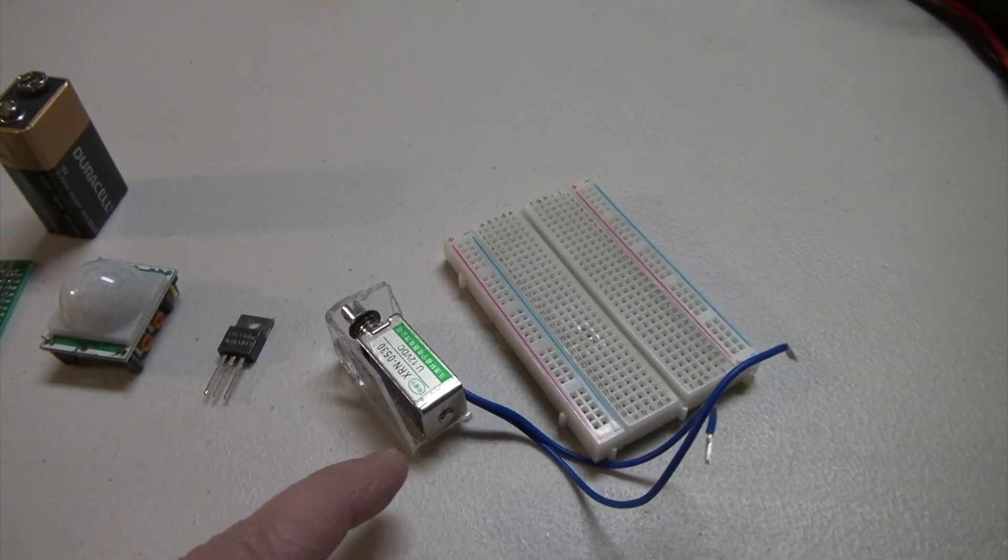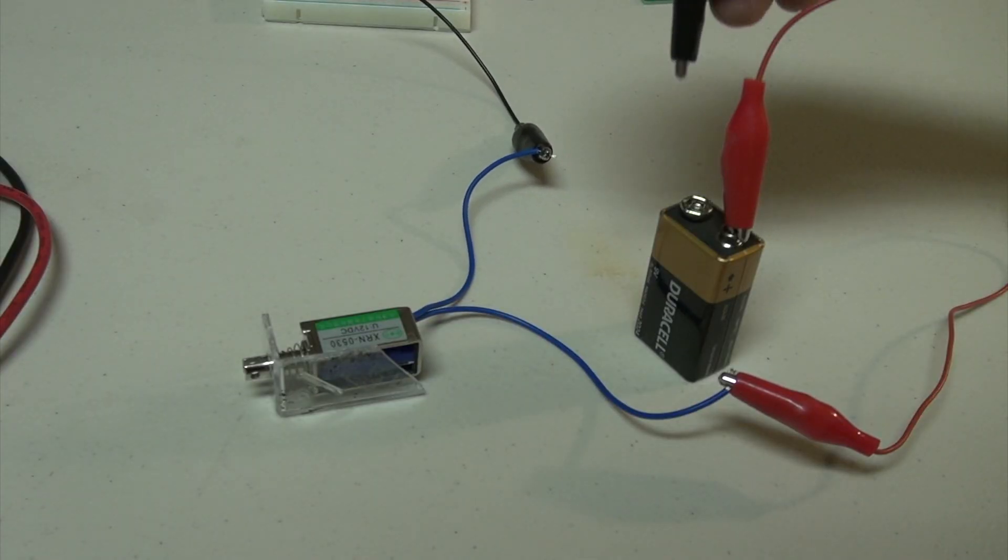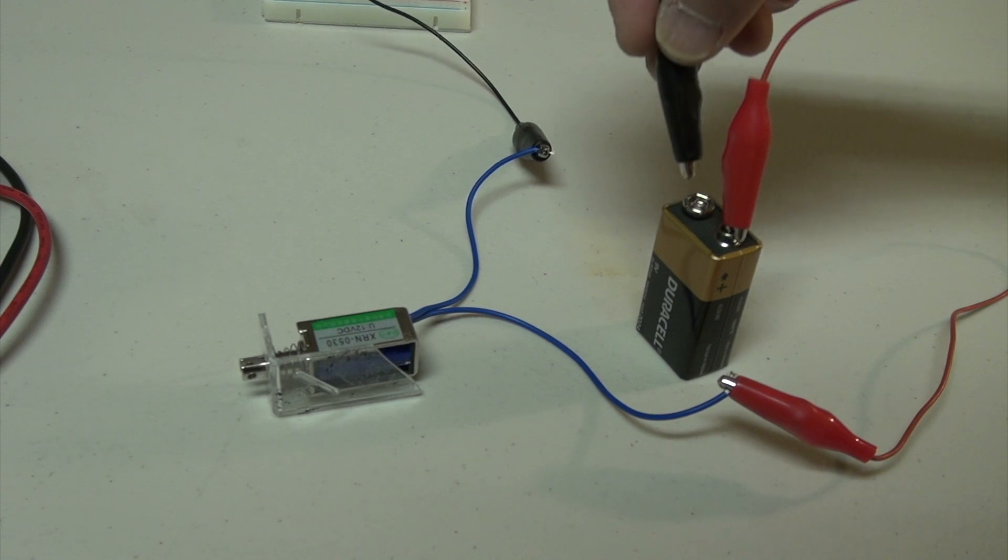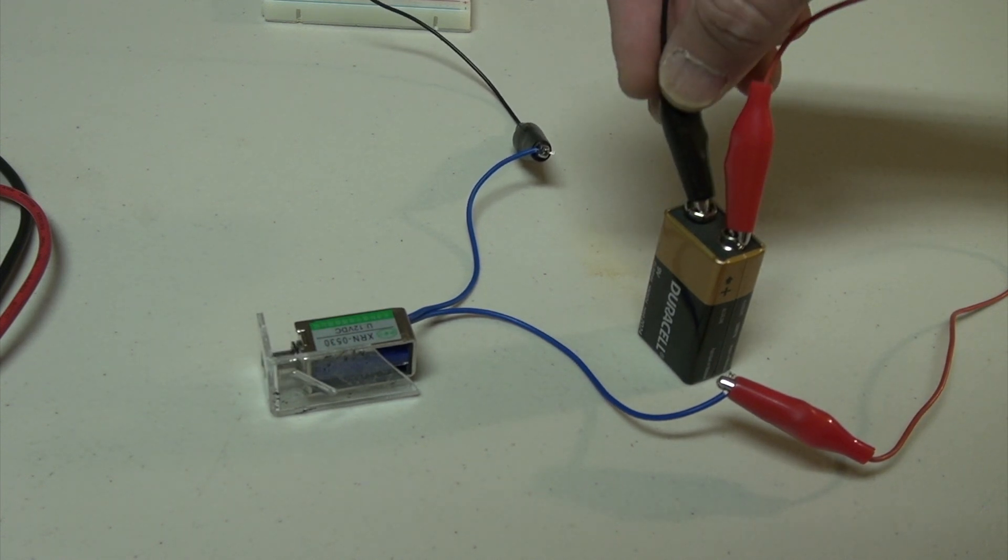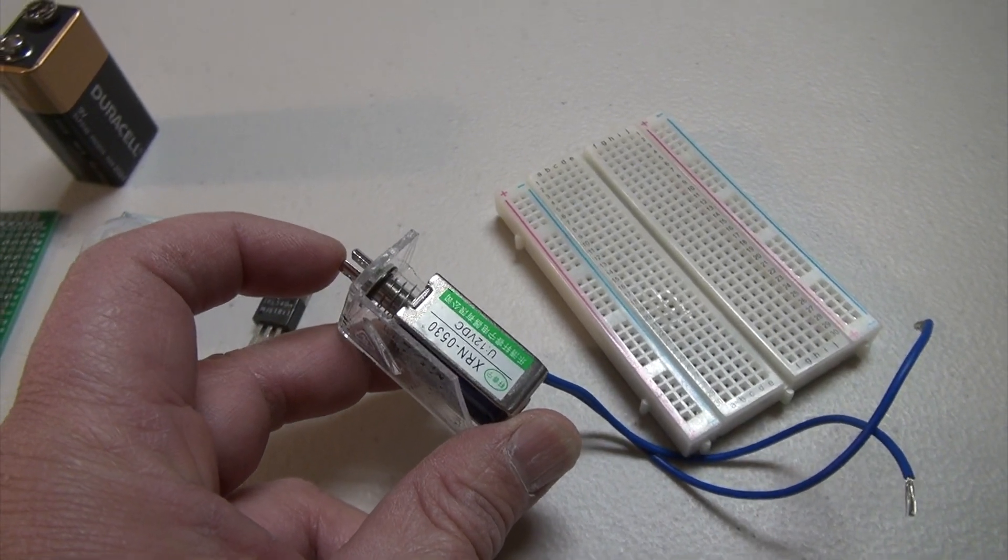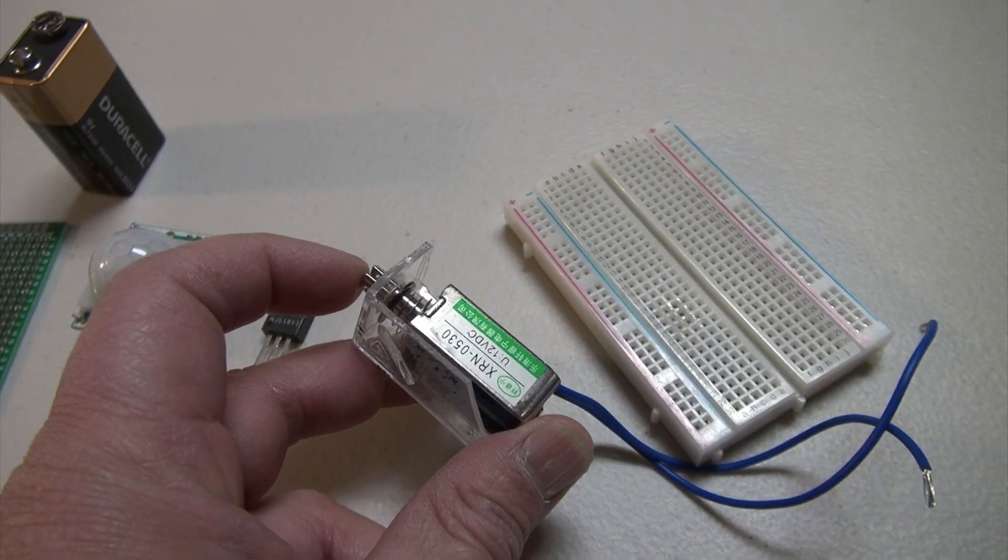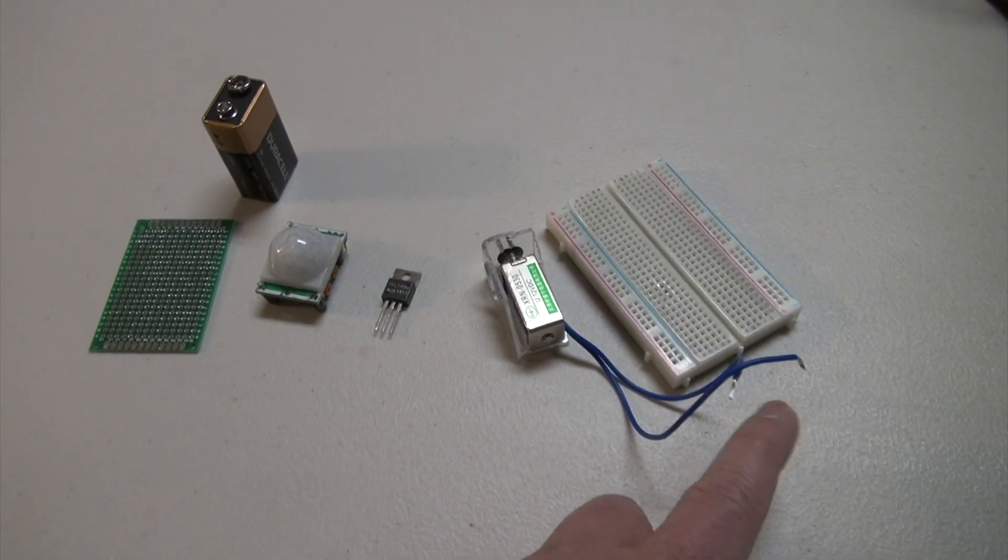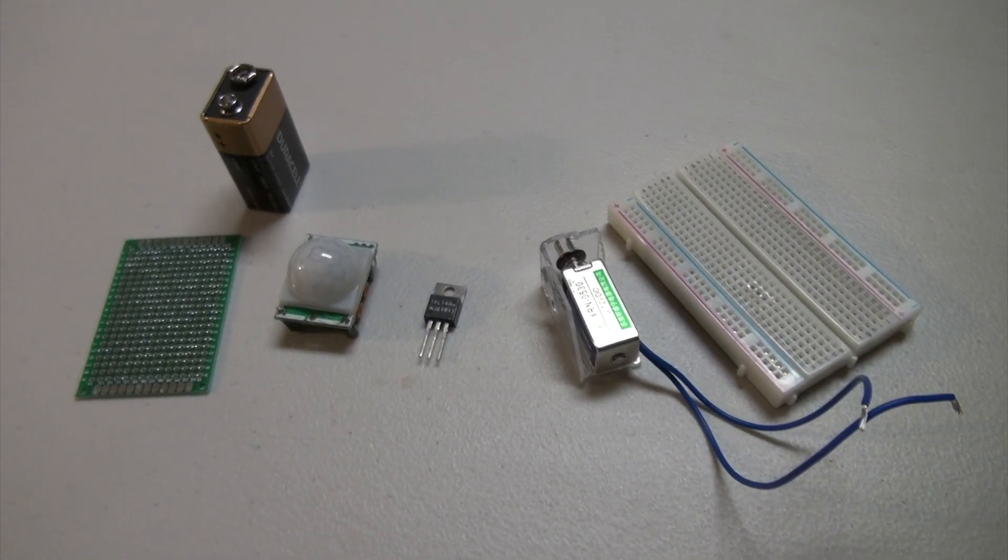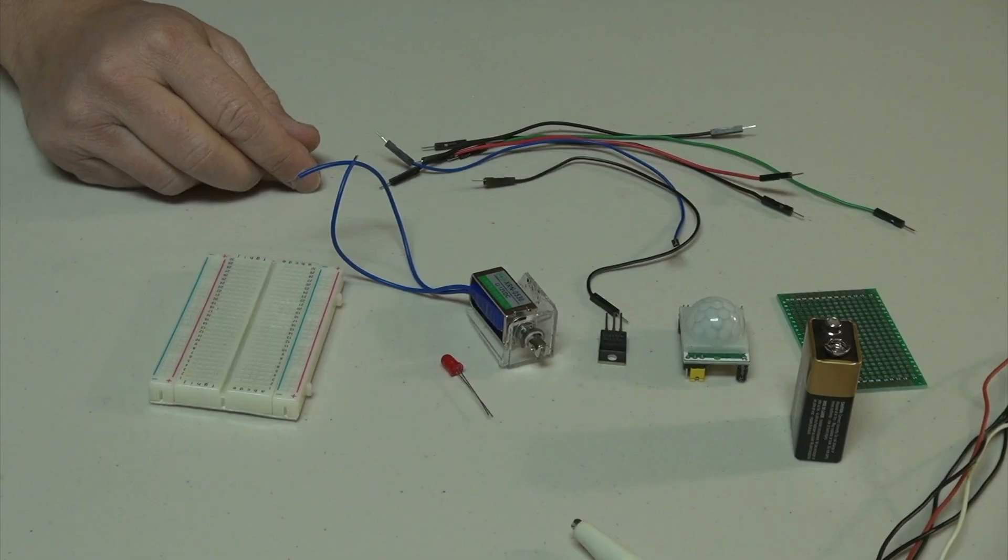The next item here is the pull solenoid. This is a cool device - when you apply electricity through here, it produces a magnetic field to create a magnetic pull to pull the shaft down like this. As you can imagine, I'm going to use this to close the door to the mousetrap. And then we have a breadboard that we're going to test our circuit on.